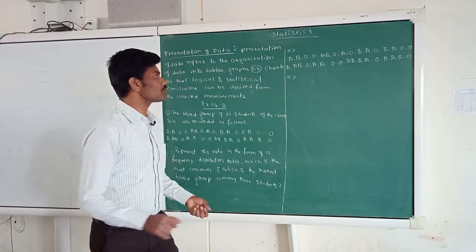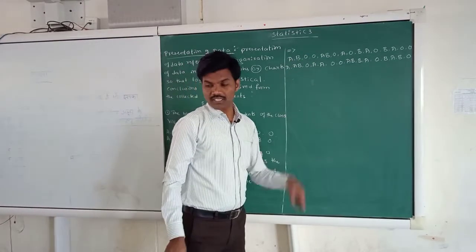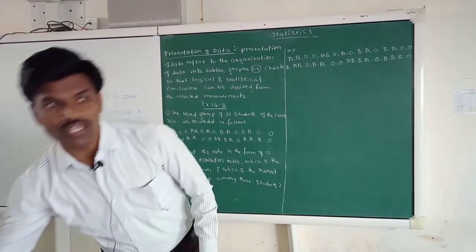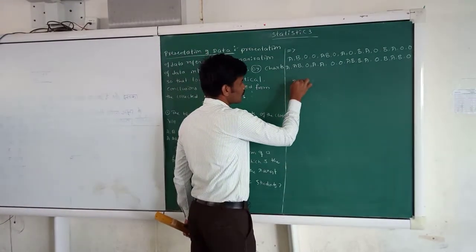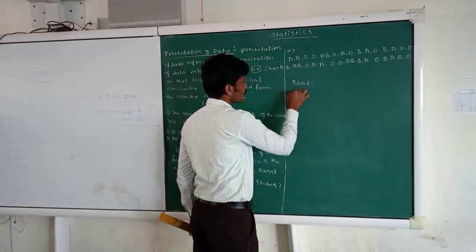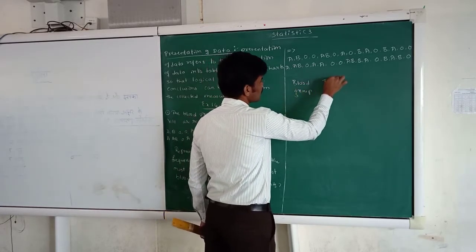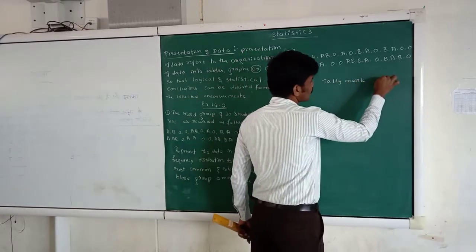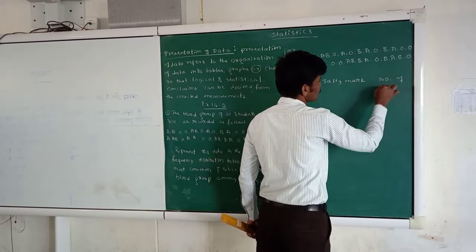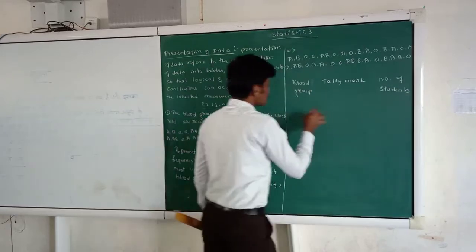Students, first what we need to do? You need to write the given information first. Then afterwards, we need to draw a table. So what is that? Just to see, the blood group, and the tally mark, and the number of students. Okay.